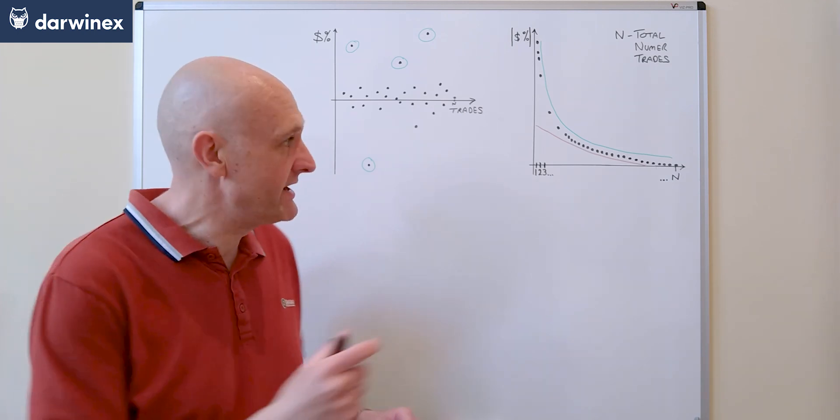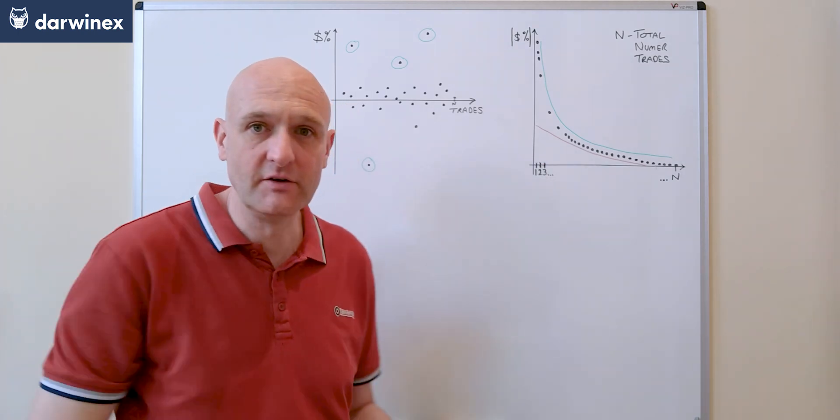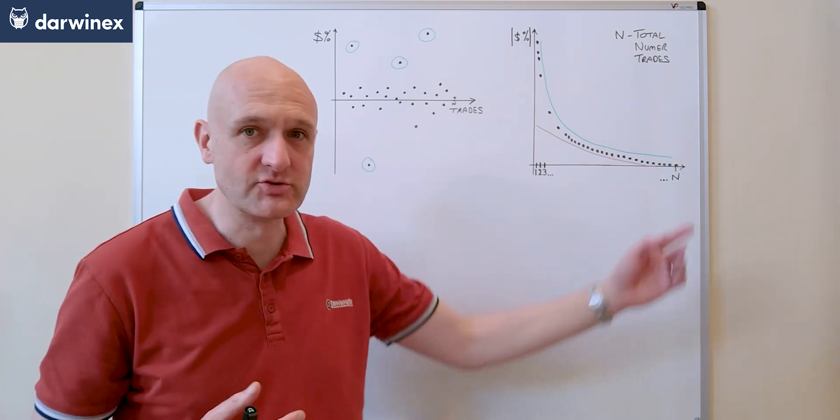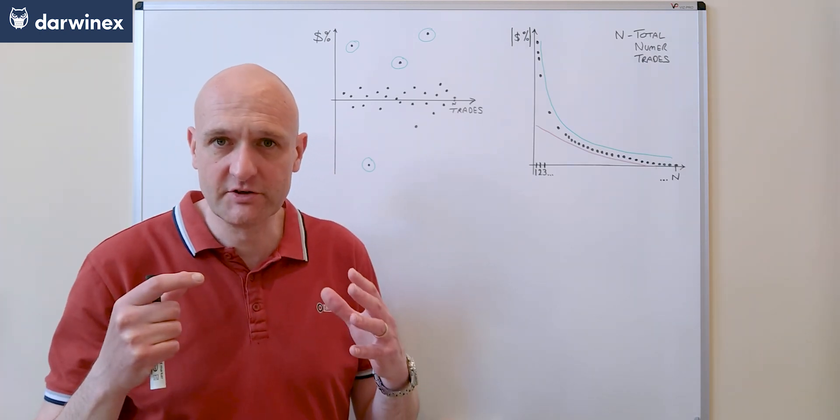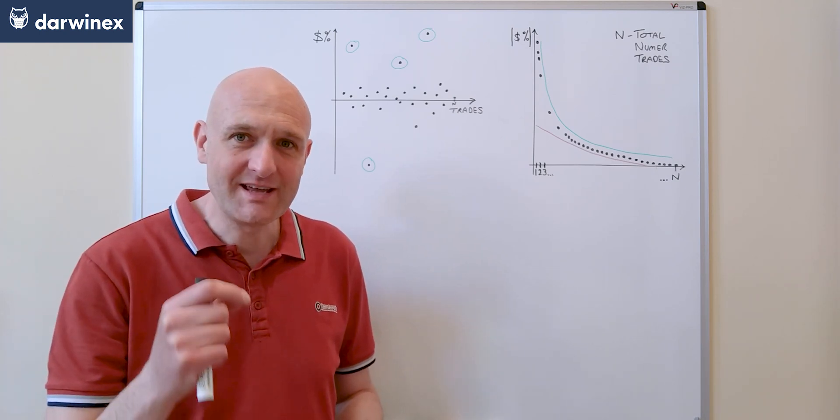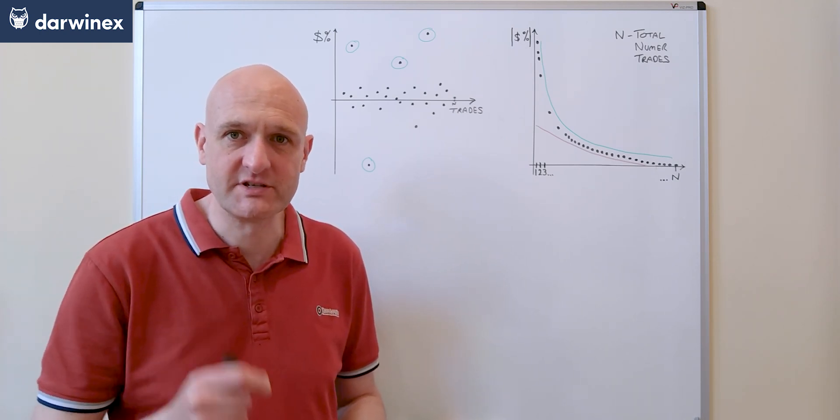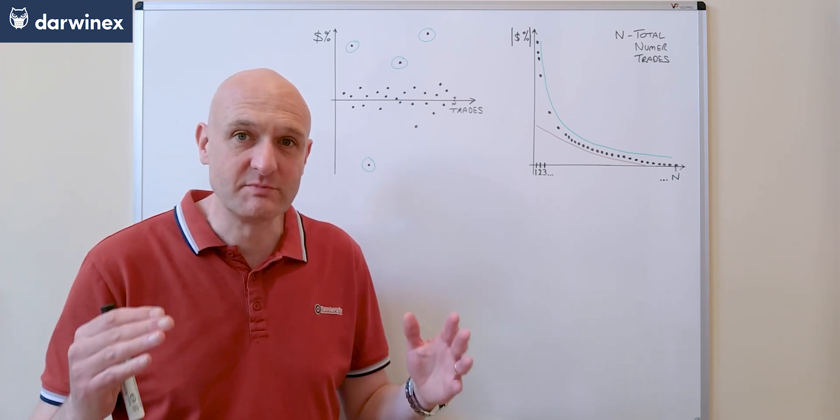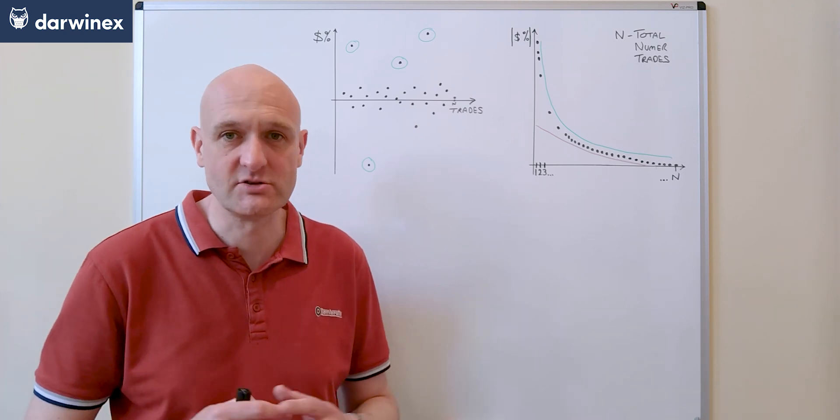We take one percent of the trades from the left hand side of this chart. So if this axis represents say one thousand trades, then we're going to look at the ten biggest trades in this one percent section. We then calculate the average size of those ten trades and compare to the average size of all trades, and this gives me what's called the overfitting score.